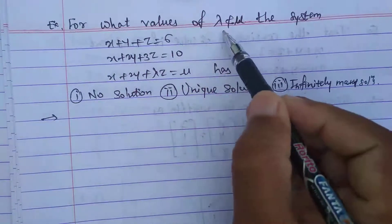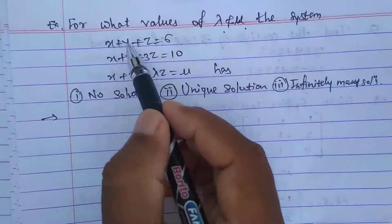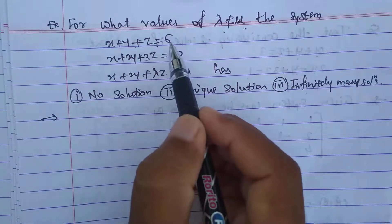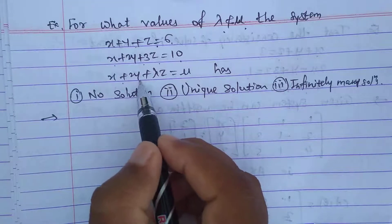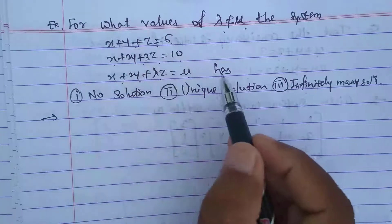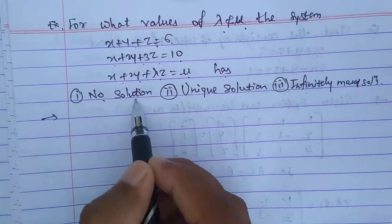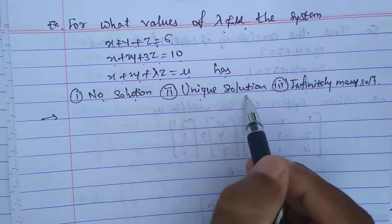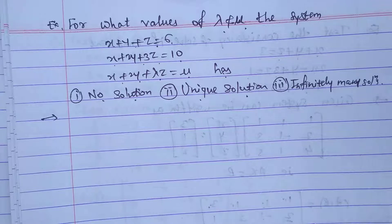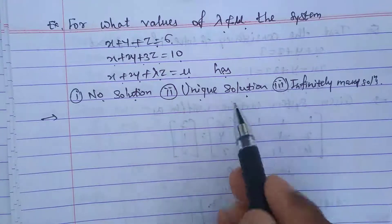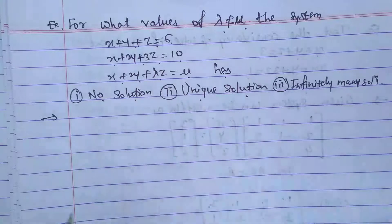Next example: for what values of lambda and mu does the system x plus y plus z equals 6, x plus 2y plus 3z equals 10, x plus 2y plus lambda z equals mu have: (1) no solution, (2) a unique solution, and (3) infinitely many solutions? We need to find the values of lambda and mu for each case.